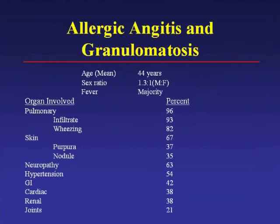Churg-Strauss, or allergic angiitis and granulomatosis, has distinctive characteristics. I had the opportunity to work at the NIH with Dr. Sheldon Wolf, a pioneer in this disease who was my mentor for 11 years at Tufts. Most of these vasculitides have a mean age of onset around 40 to 45 years. I used to describe this as a disease of the middle-aged; now I talk about it as a disease of young individuals—my perspective has changed.